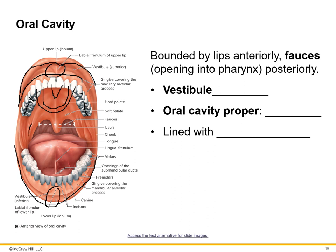The roof of the oral cavity is called the palate. The anterior portion is the hard palate and the posterior portion is the soft palate. At the back hangs the uvula, which plays a role in the gag reflex and prevents things too large from entering the esophagus. Lateral to the uvula are two arches called fauces, which serve as the gateway into the throat.